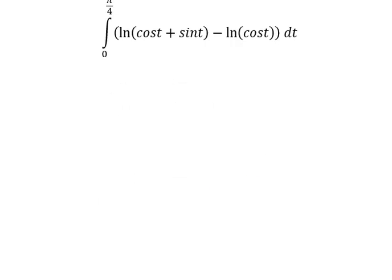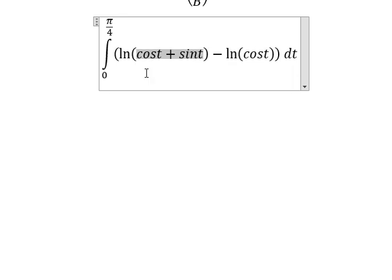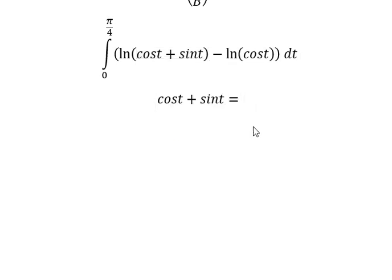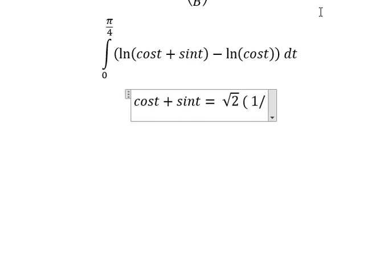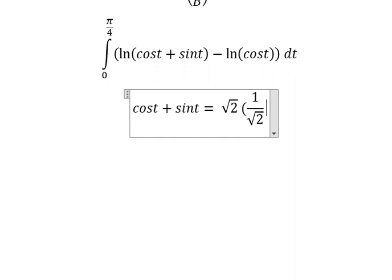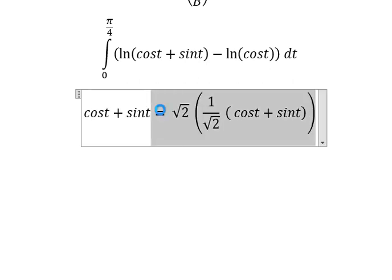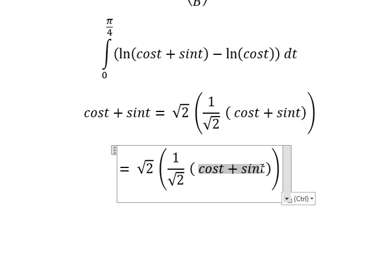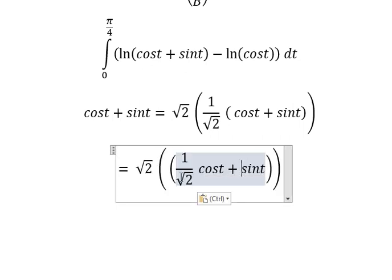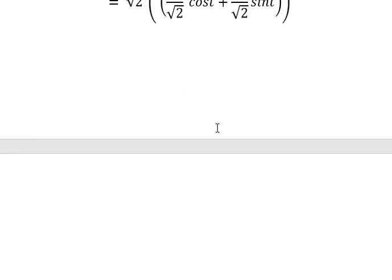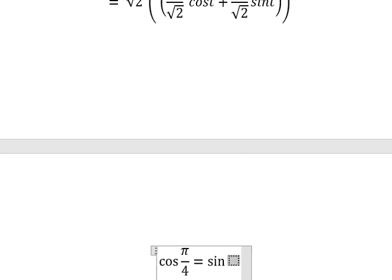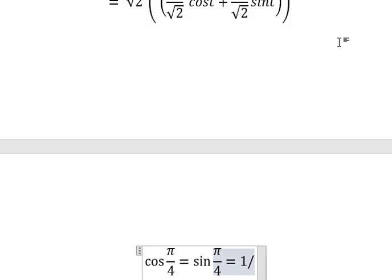Next we need to consider cos(t) plus sin(t). In this situation we need to factor out the square root of 2, because these terms cancel and give us 1, leaving cos(t) plus sin(t). We know that this distributes, and cos(π/4) equals sin(π/4) equals 1 over the square root of 2.